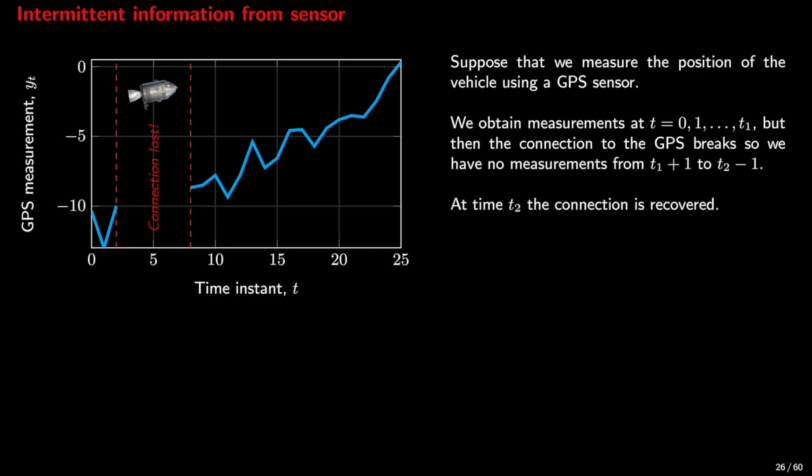The Kalman filter can be applied in cases where the sensor provides measurements intermittently. This is the case when we have a remote sensor, as in the case of a GPS system. So the connection can be lost. The GPS provides measurements from time, let's say, 0 up to time t₁. And then the connection breaks for some time, and it recovers at some future time t₂.